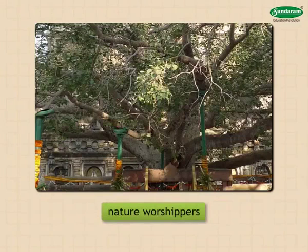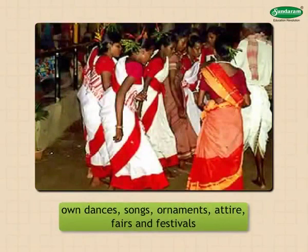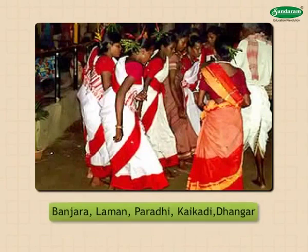Adivasis have their own dances, songs, ornaments, attire, fairs, and festivals. Banjara, Laman, Pardhi, Kaikadi, and Dhangar are some of the major nomadic tribes in our state. As a result of the variations in the physical setup and climate in the different parts of the state, we find that human life also varies considerably in different parts of Maharashtra.